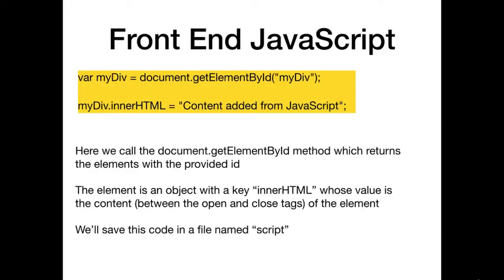So what can we do with JavaScript? The big thing I'll focus on today is we can manipulate what's called the DOM — the Document Object Model — which is a tree structure storing all of your HTML elements. At the top level you have the HTML element, then head and body, then all your elements for your site. That's what's storing all of those HTML elements. We can manipulate the DOM through JavaScript using special functions and methods.